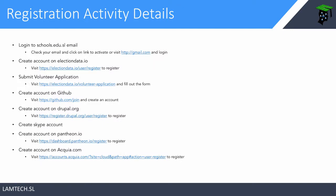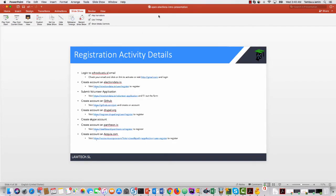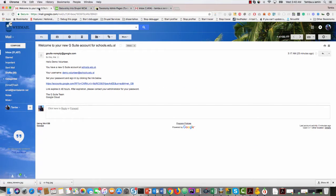This next slide walks you through everything you need to do — all the activities. First, we want to log into the schools.edu email. To log in, you should have already received an email with the instructions. If you received that email, just click on the link and you'll be able to start the process. If not, go to gmail.com. Let me do that live so you can see it. I have already received my email to do this, and this is the instruction you will receive: that an account has been created for you.